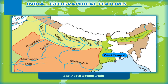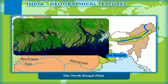The North Bengal plain lies in the state of West Bengal, stretching from the foot of the eastern Himalayas to the northern limb of the Bengal basin. The plains are washed by several rivers, including streams that join the Brahmaputra and some tributaries of the Ganga. Moving southwards is the Barind plain, which is the old delta of the Ganga.